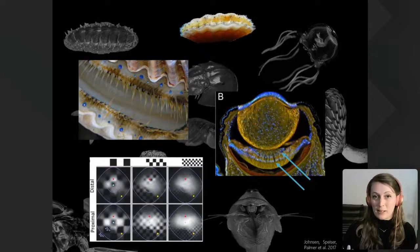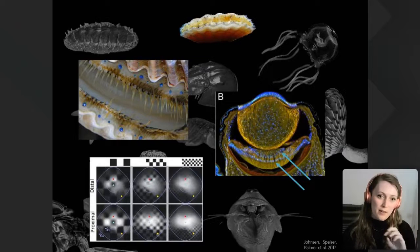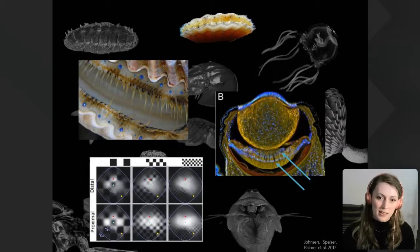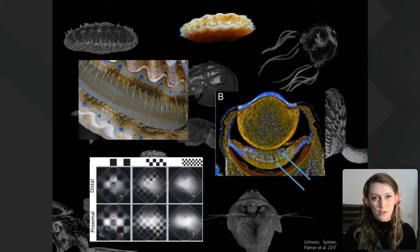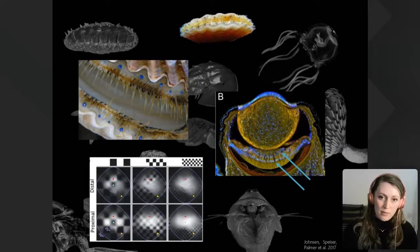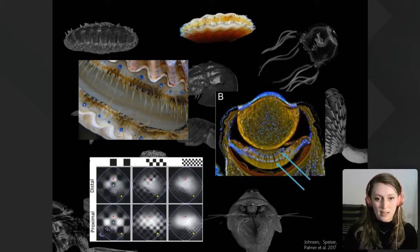Scallops have tens or even hundreds of tiny bright blue eyes spread across the mantle — the rim of the two shells. What's quite interesting about scallop eyes is that they've actually got two retinas, two layers of photoreceptive cells. The eye has a first retinal layer and a second underneath, then a concave mirror at the very base that reflects light back up into the proximal retina. So scallops actually see two different images at the same time.